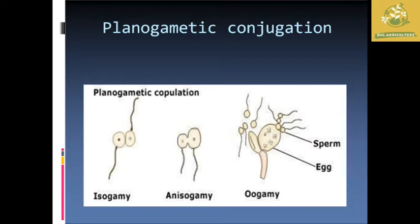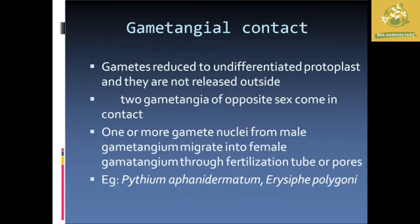In isogamy, the gametes attach in different directions. In anisogamy, they attach in the same direction. In oogamy, a stagnant egg is present and the sperm, which is the male gamete, moves toward it for the reproduction process. Now we are going to see about gametangial contact.